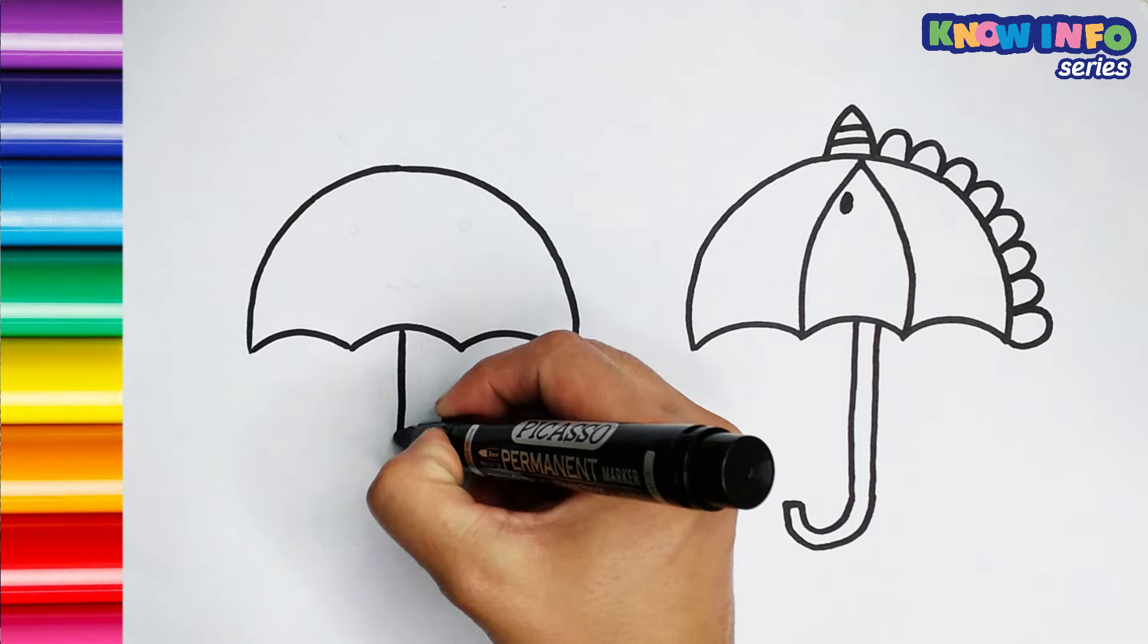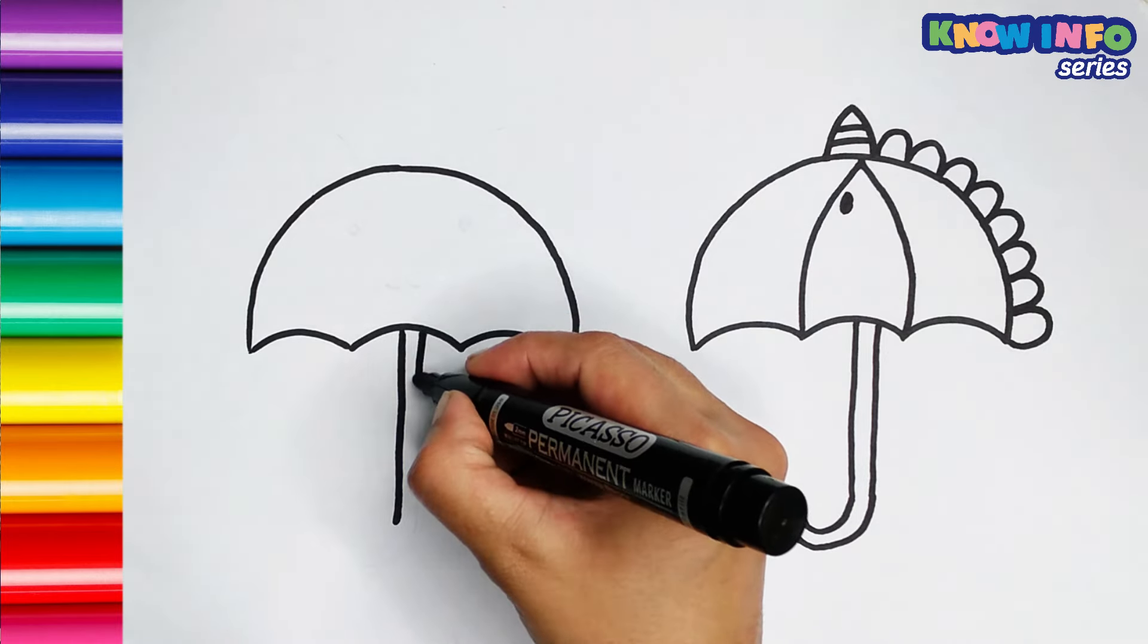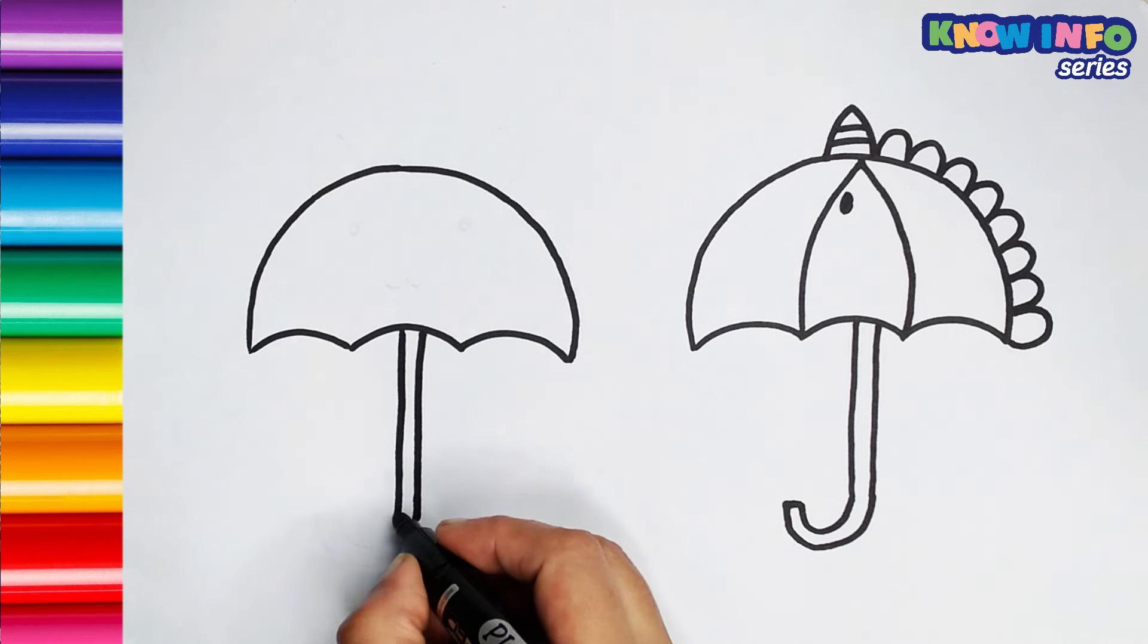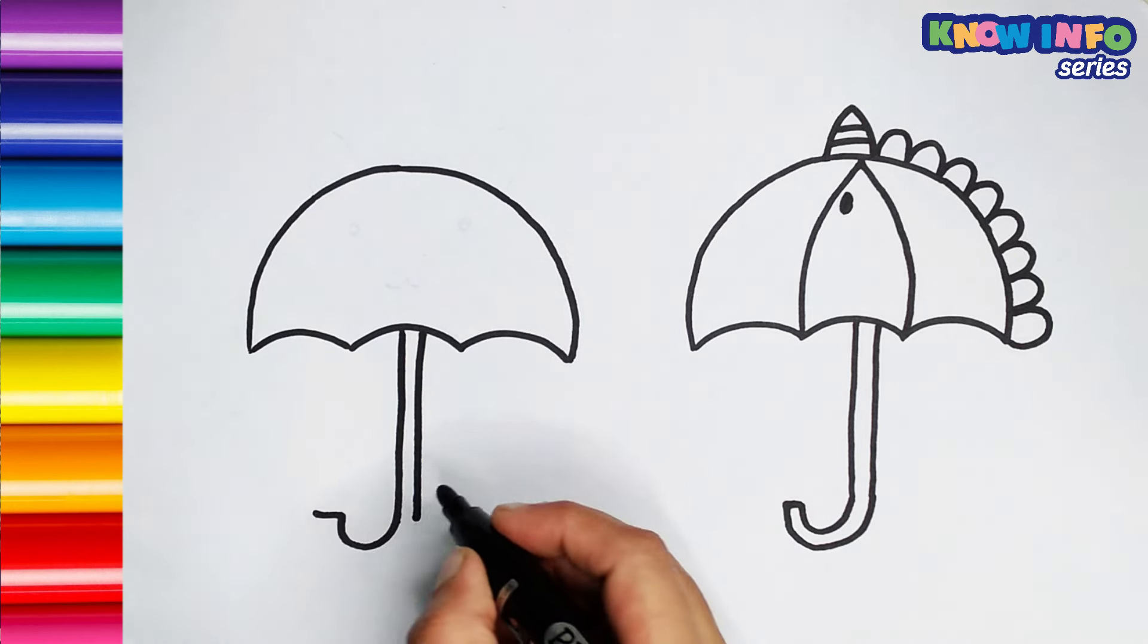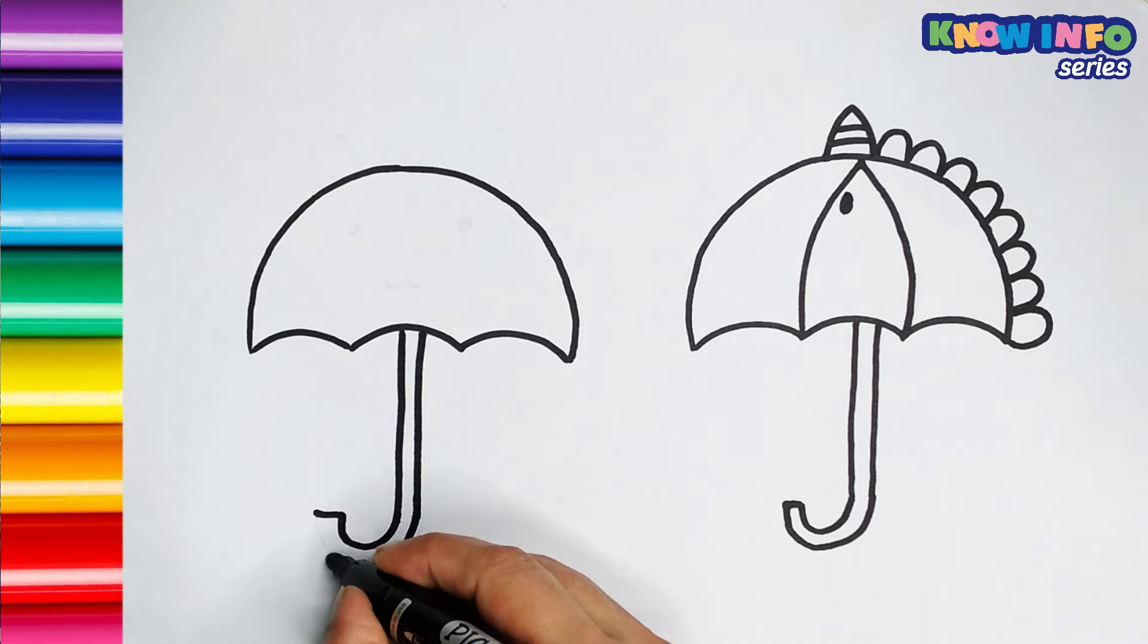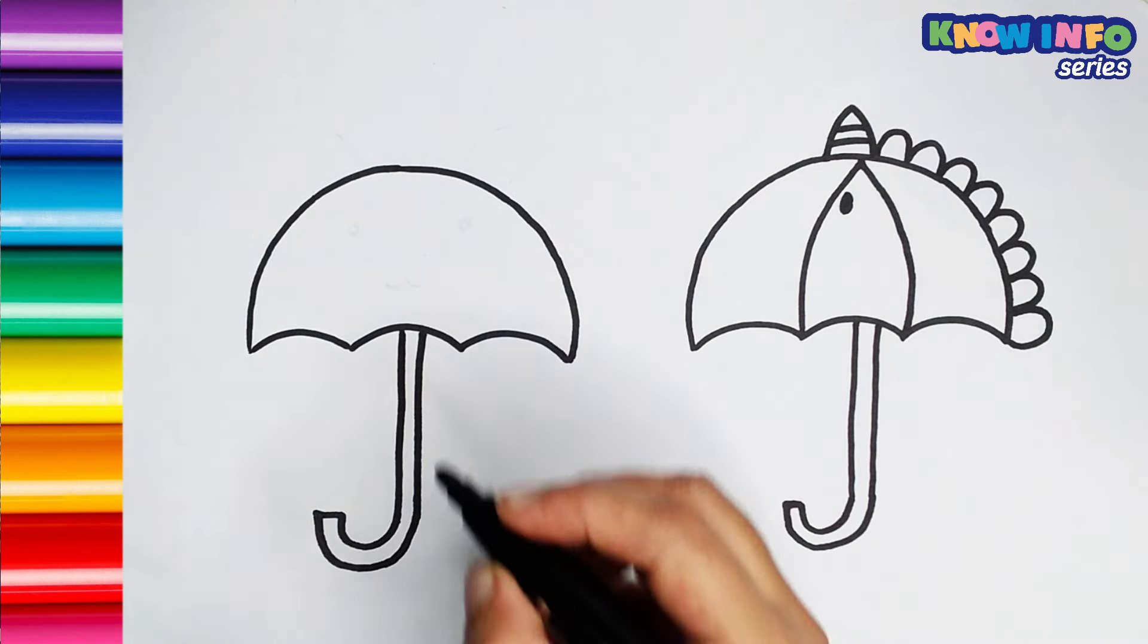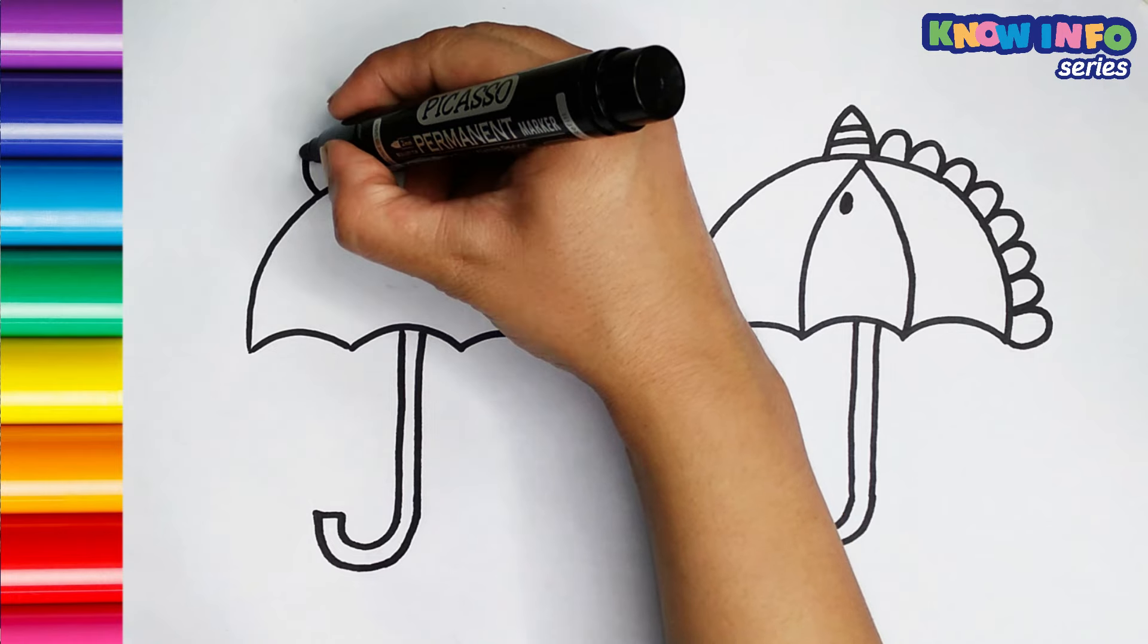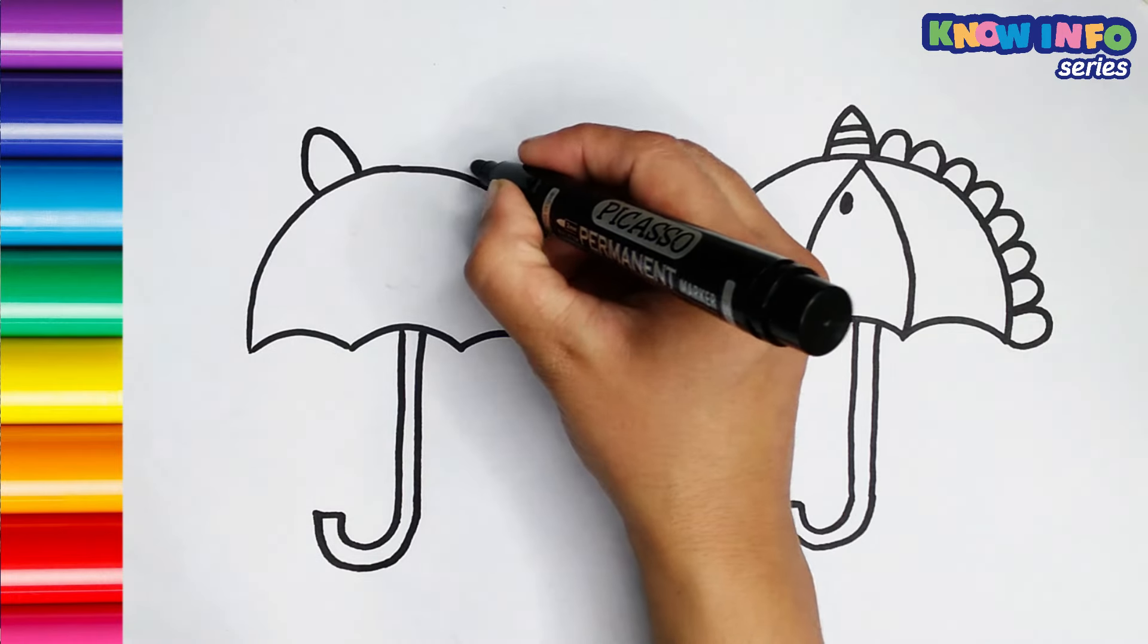And here again, draw a vertical straight line beneath the canopy to create the handle. Make the two ears.